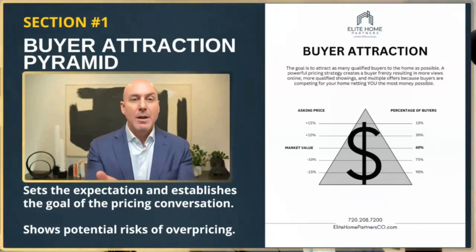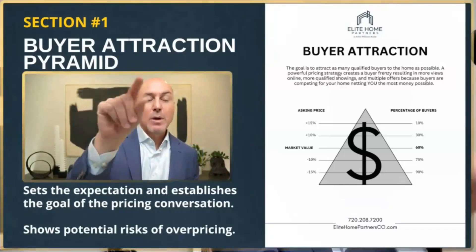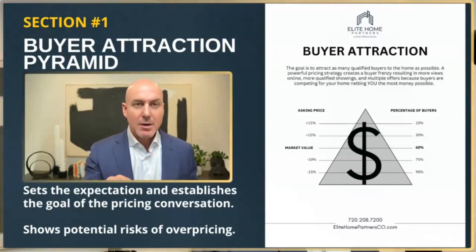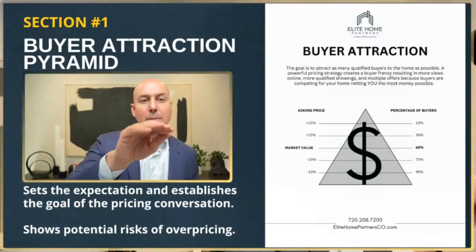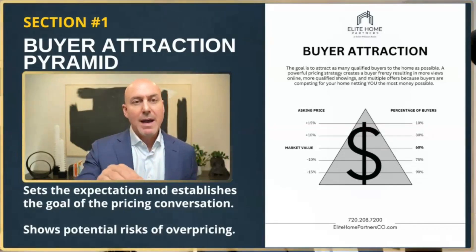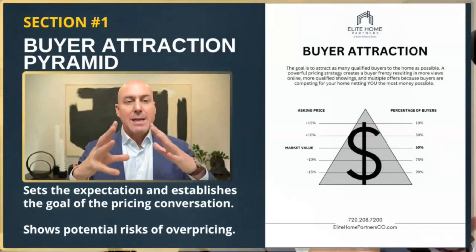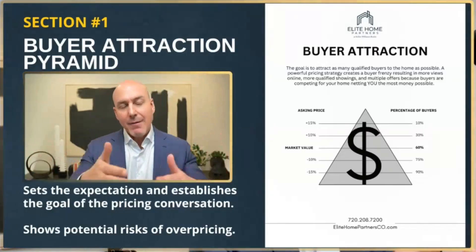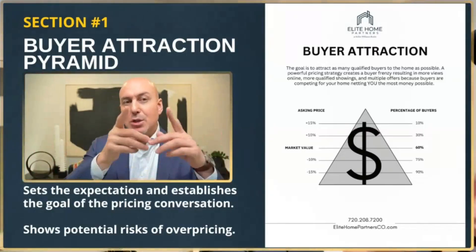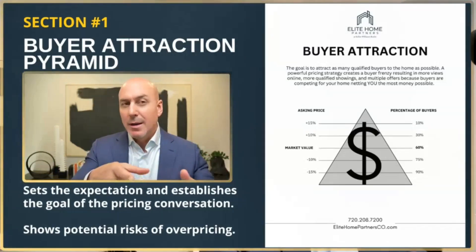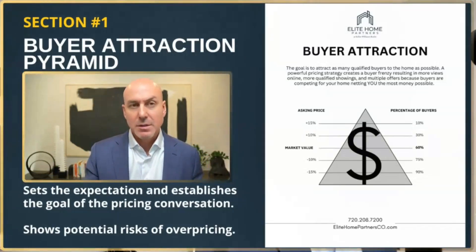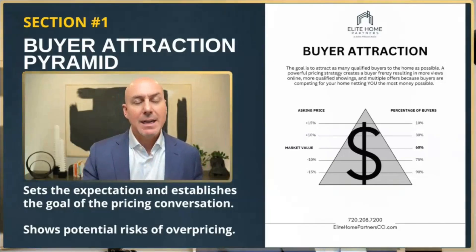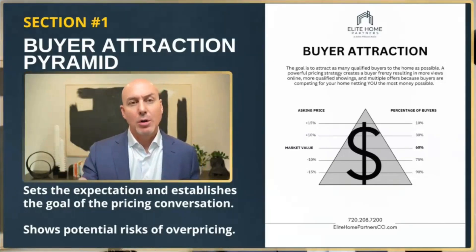When I do this live, I have it printed out, and I draw a circle and go: we don't want to be up here and we don't want to be down here. We want to be right at or below market value so we can get into that fat section of this pyramid to get everybody in here so you're in a position to turn down offers instead of not receiving any offers at all.